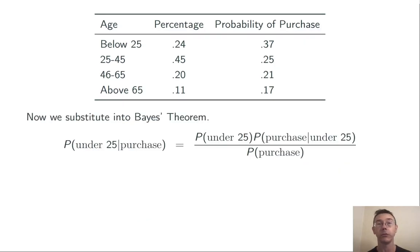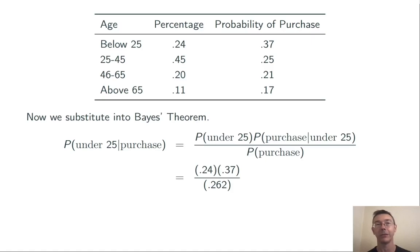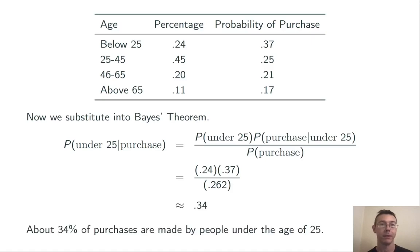We're ready to substitute into Bayes' theorem. We take the probability that someone is under 25 from the table: 0.24. The probability that someone under 25 makes a purchase: 0.37. And the overall probability that someone makes a purchase from the previous calculation: 0.262. Simplifying, we get 0.34. About 34% of purchases are made by people under the age of 25.